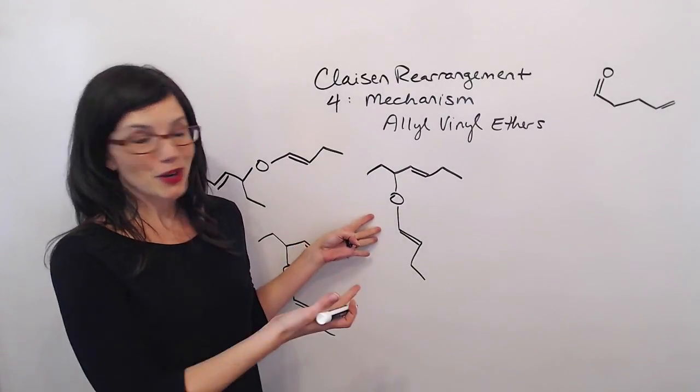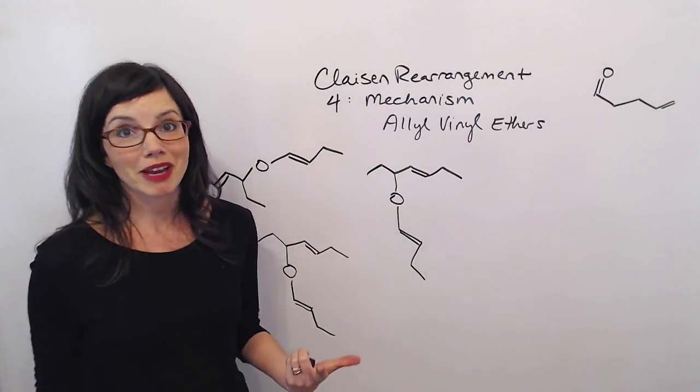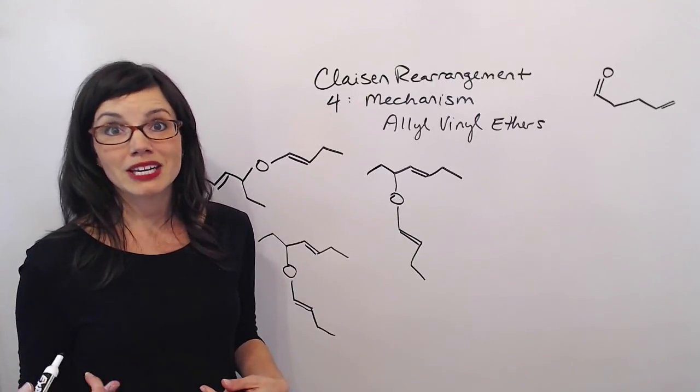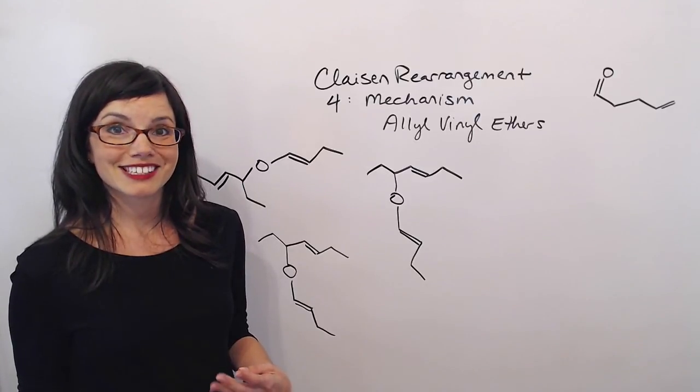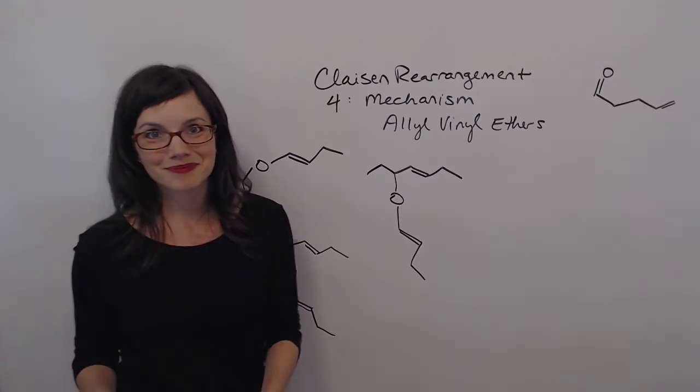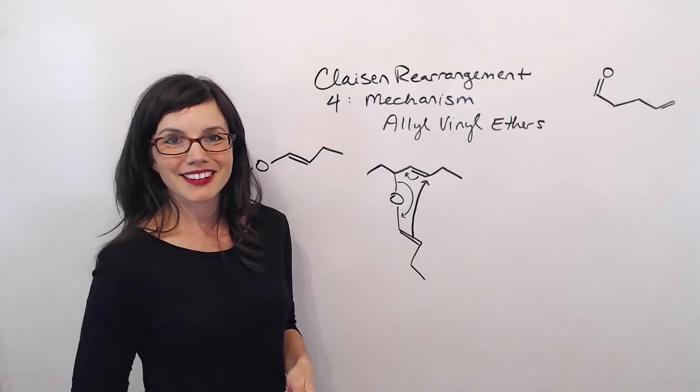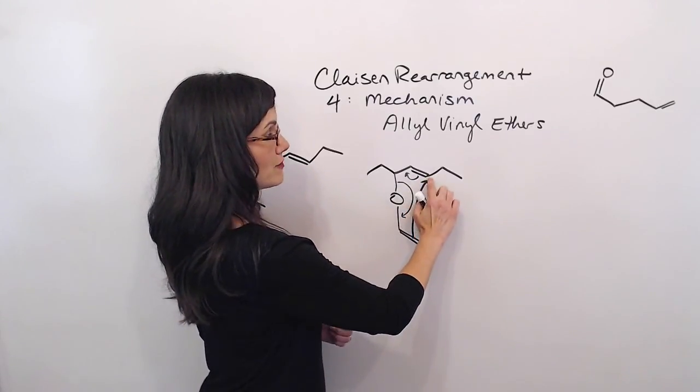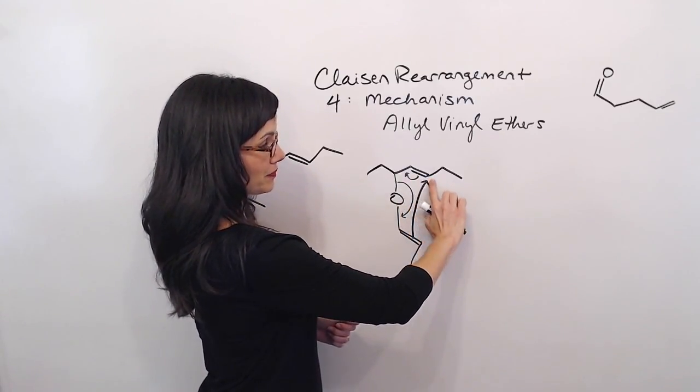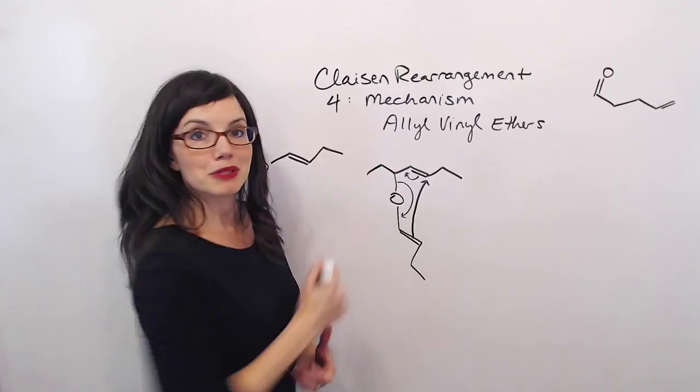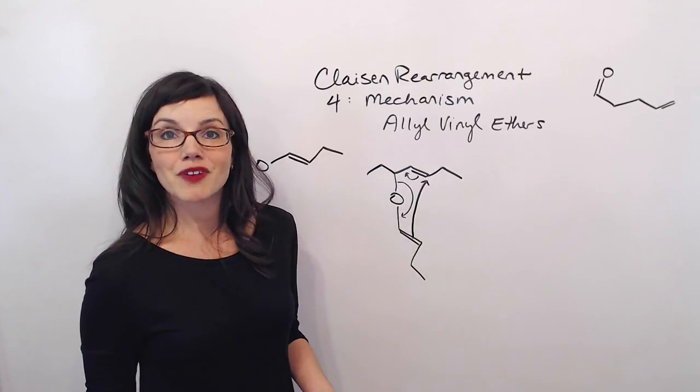So here is our reactant molecule ready to go forward with the mechanism. So why don't you go ahead and draw three arrows to represent our electron movements. And don't worry about drawing your product yet. Let's just get those arrows down and then come back and compare. Here's what I have. The carbon-carbon double bond of the vinyl group goes out and attacks the far carbon of the allyl group. Then this carbon-carbon double bond moves over. This bond breaks and reforms the carbonyl.